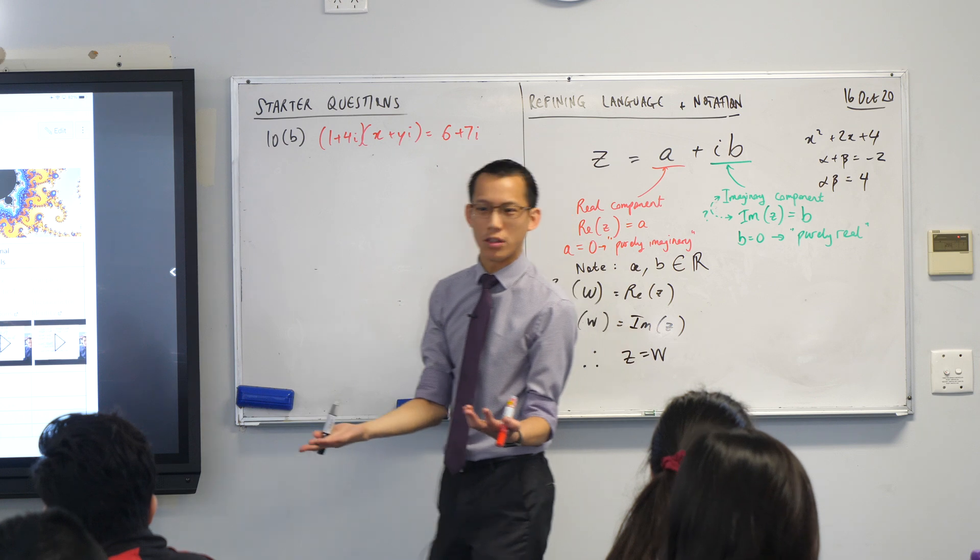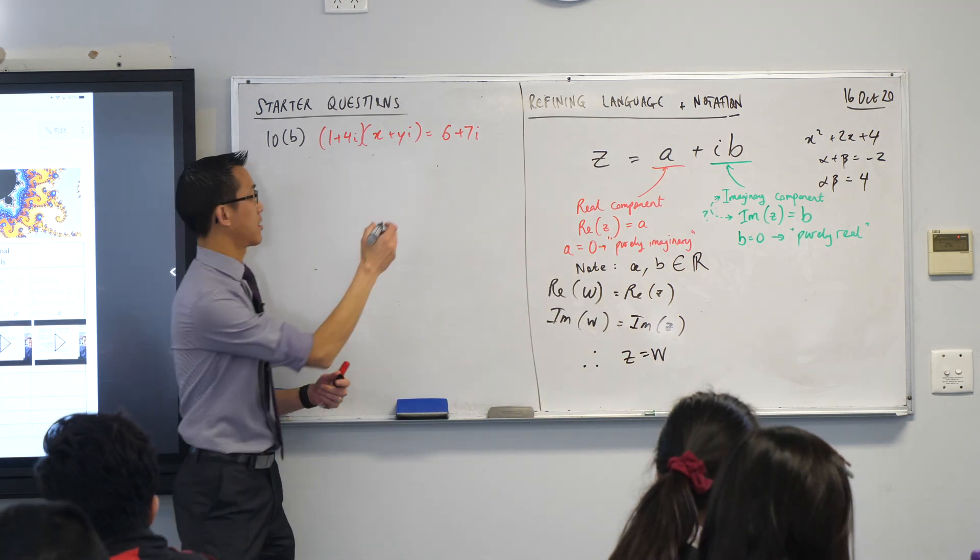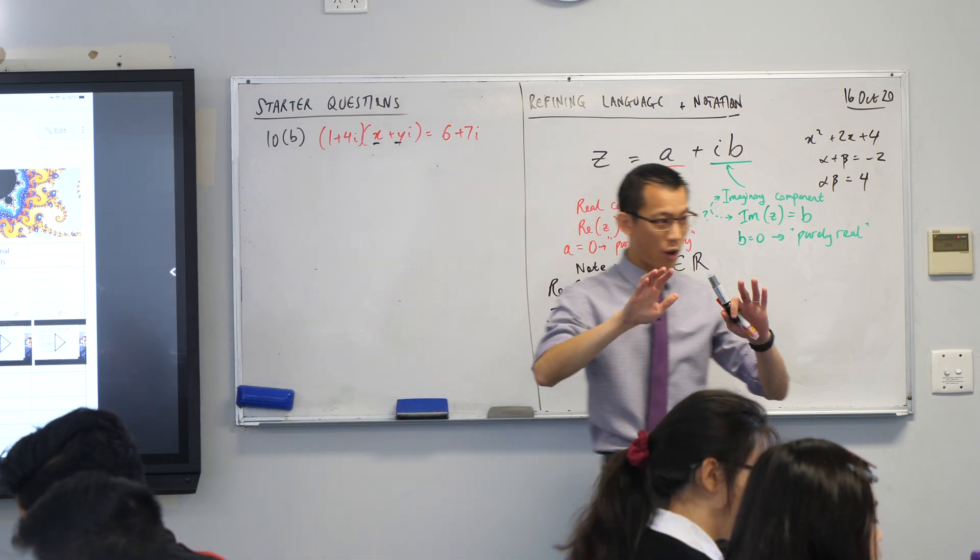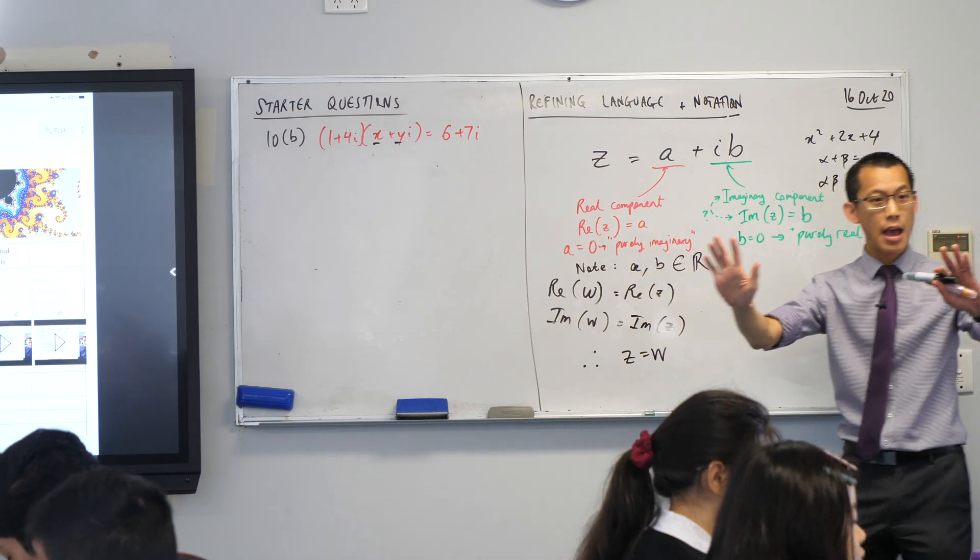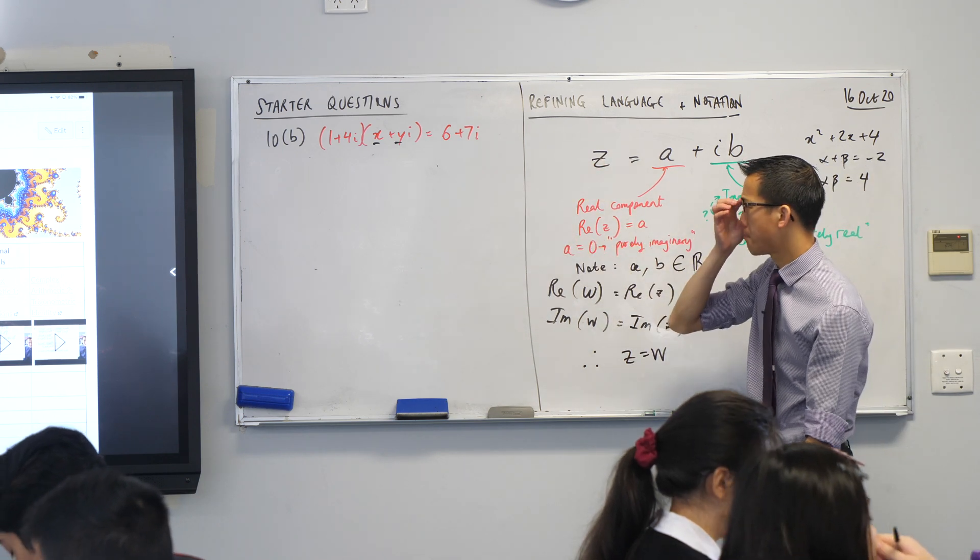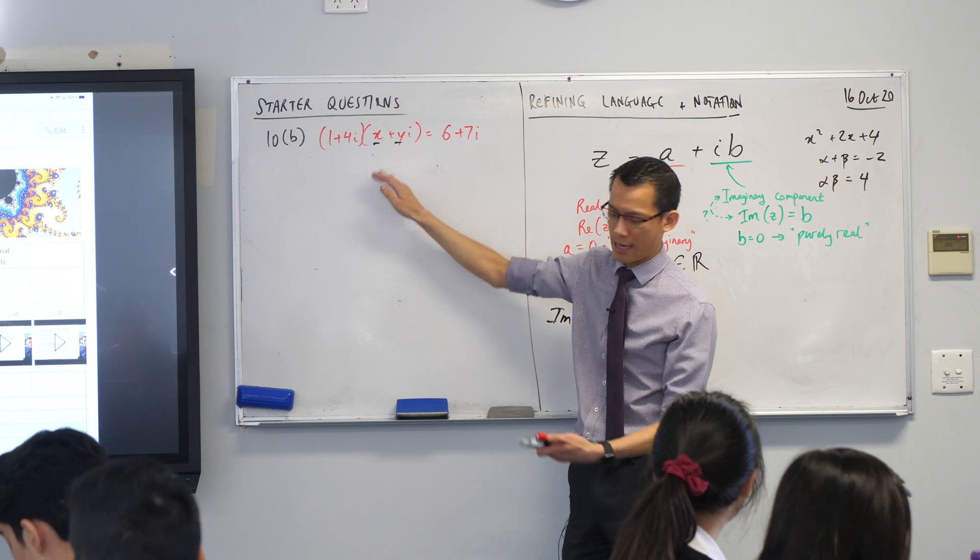They want us to find out what the unknowns are. In this case, they're calling them X and Y rather than A and B. You'll see them just as frequently. By equating the real parts and the imaginary parts, work out what X and Y are. So what's going on here? If you have a look at this, and you can go ahead and write it down, we're going to do this together.